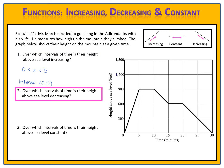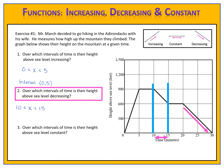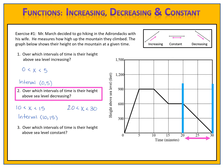Question number two asks over which intervals of time is their height above sea level decreasing? We look at the graph and identify two sections where the function is decreasing. We'll write a separate interval for each. The first is between 10 and 15, written as 10 < x < 15 or using interval notation. The second decreasing section is from 20 to 30, which we can also write as a compound inequality or using interval notation.